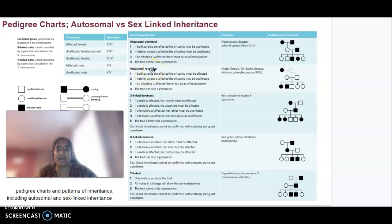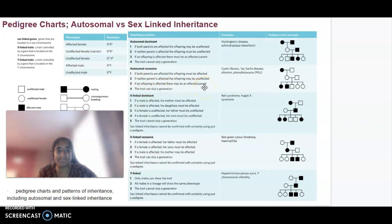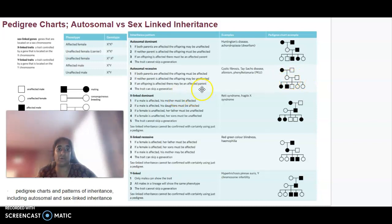For autosomal recessive: if both parents are affected, the offspring must also be affected; if neither parent is affected, offspring may be unaffected. An offspring can be affected with unaffected parents, and the trait can skip a generation. An example is cystic fibrosis.